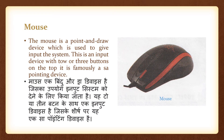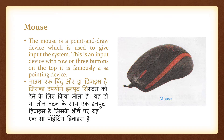Mouse: The mouse is a point and draw device which is used to give input to the system. This is an input device with two or three buttons on the top. It is famously a pointing device. Mouse ek bindu aur draw device hai jiska upyog input system ko dene ke liye kiya jata hai. Yeh do ya teen button ke saath ek input device hai aur ek pointing device hai.